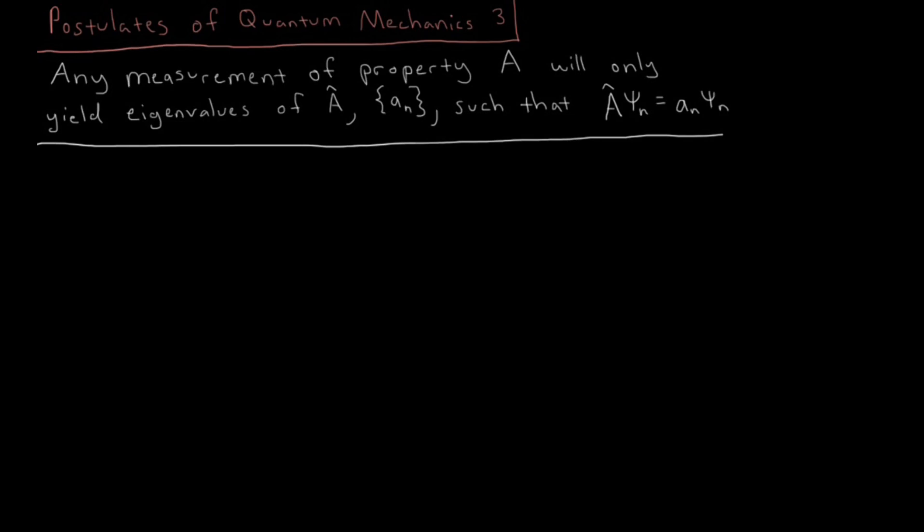For this property A, whenever we measure it, the only values we will observe are eigenvalues of the corresponding quantum mechanical operator for A. So these eigenvalues, there is going to be a set of those eigenvalues which are possible, and these are going to obey some eigenvalue equation where A acting on the wave function.